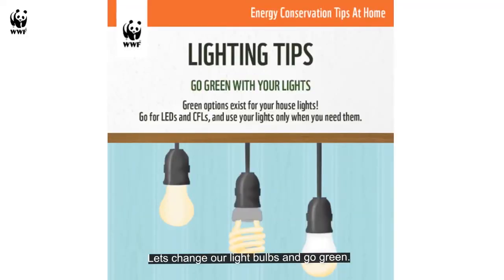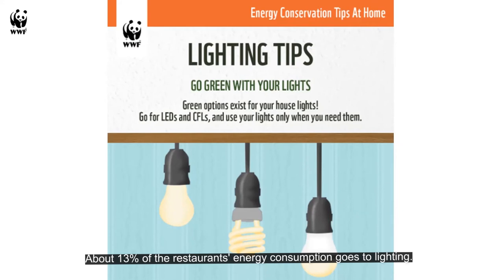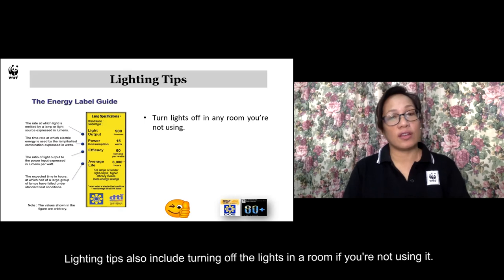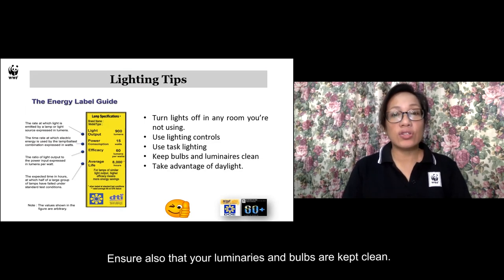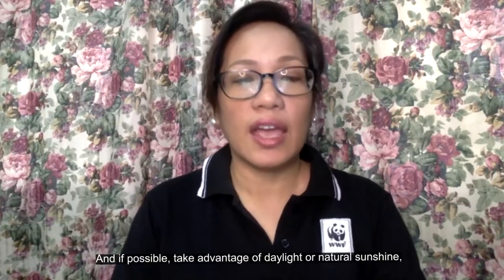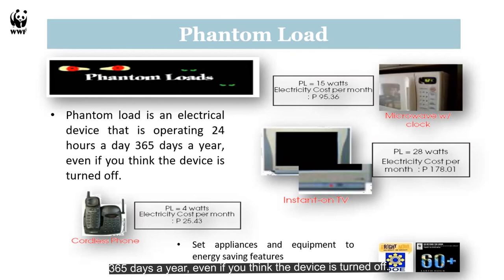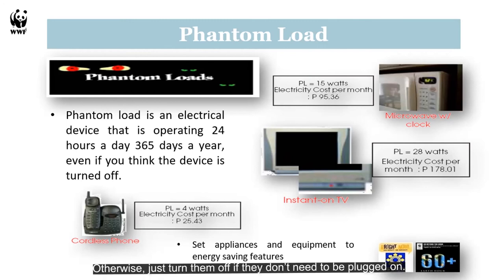Now, let's go to lighting. About 13% of a restaurant's energy consumption goes to lighting. Energy-efficient light bulbs such as CFLs and LEDs use up to 80% less energy than conventional lighting and can last up to 25 times longer. Lighting tips include turning off lights in rooms when not in use, using task lighting and lighting controls, and keeping luminaries and valves clean. If possible, take advantage of daylight or natural sunshine. Lastly, look at phantom load — this is when an electrical device is operating 24 hours a day, 365 days a year, even if you think it's turned off. Look at your appliances and see if they have energy-saving features; otherwise, just unplug them when not needed, which will save a lot of costs in the long run.